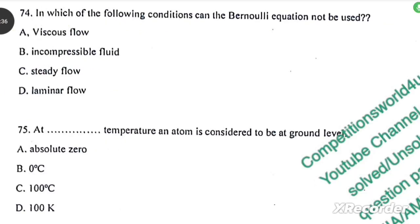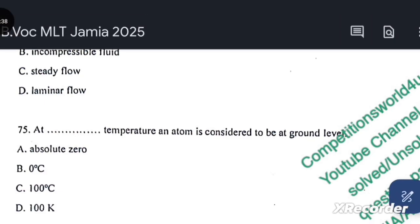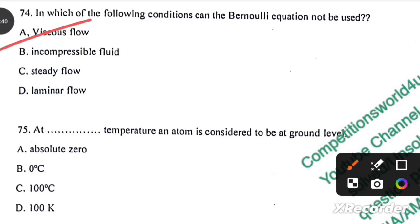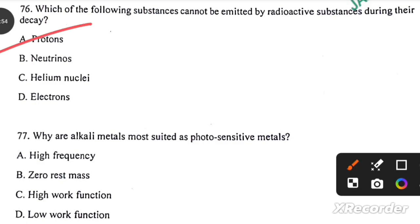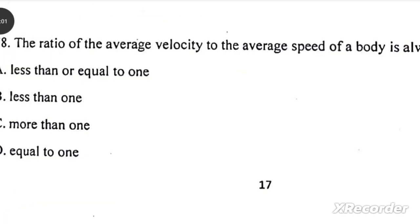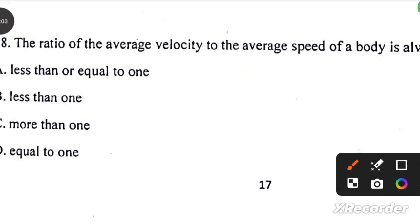In which of the following conditions can Bernoulli's equation not be used? Viscous flow. At absolute zero temperature an atom is considered to be at ground level. Which of the following substances cannot be emitted by radioactive substances during their decay? Protons. Why are alkali metals more suited as photosensitive metals? Lower function. The ratio of the average velocity to the average speed of a body is always less than or equal to 1.